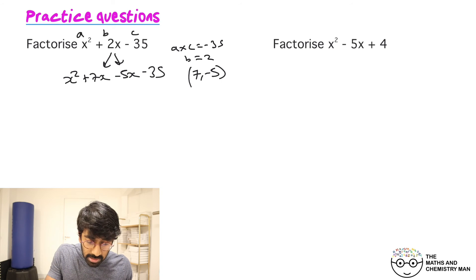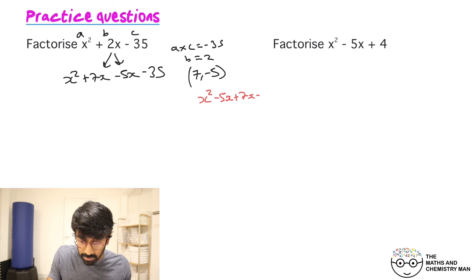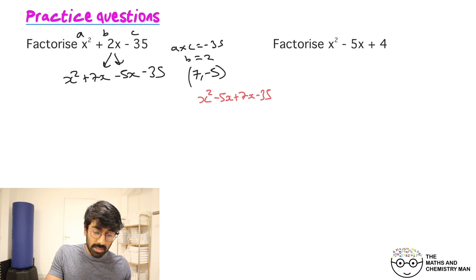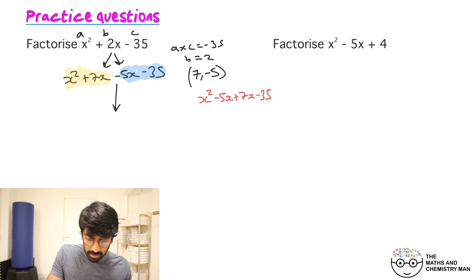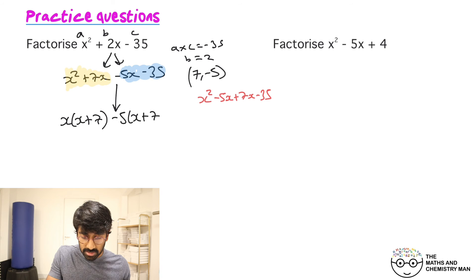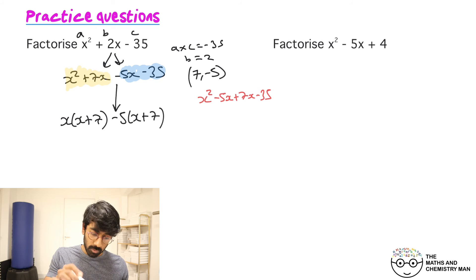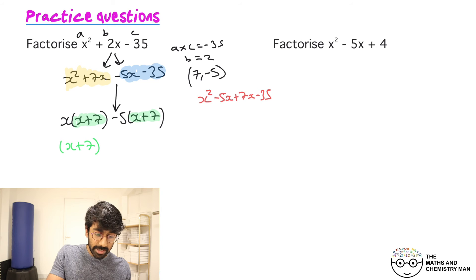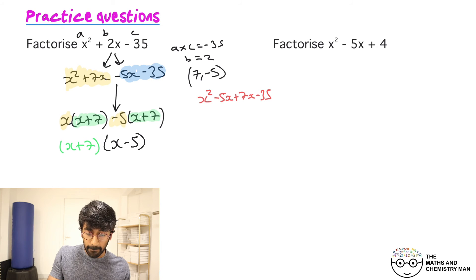Some of you may have split it the other way — minus 5x first and then plus 7x — and that will get you to the same answer. Highlighting the first two terms and the second two, bring down the minus sign. Factorize the left: x outside gives x plus 7. On the right, take out 5 giving x plus 7. Brackets match! Green highlights form the first bracket x plus 7, and x minus 5 is the second. Done.